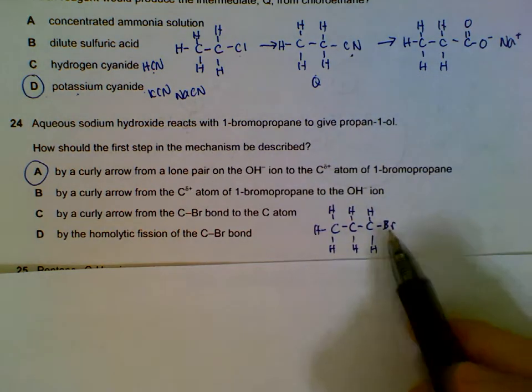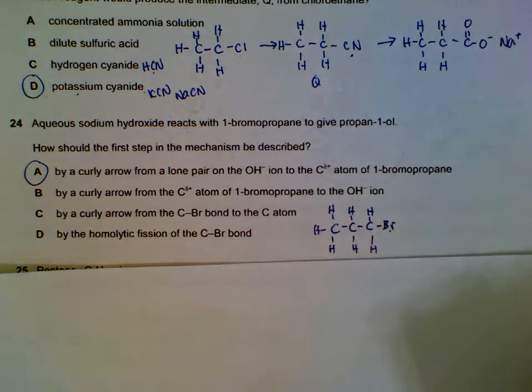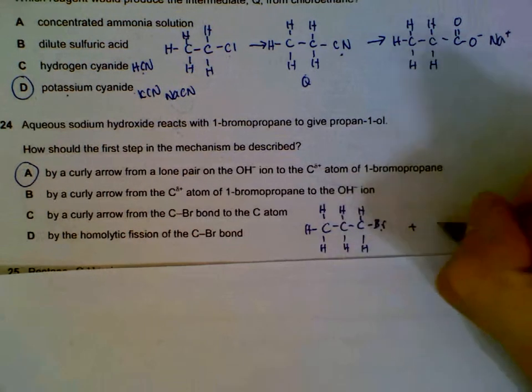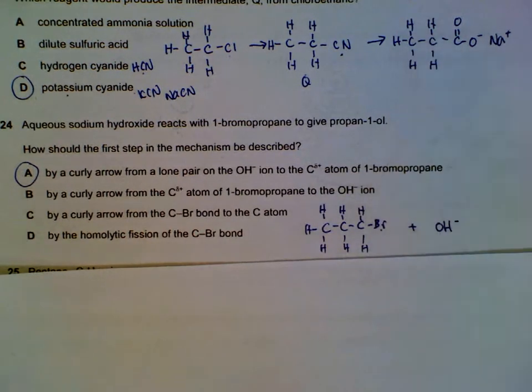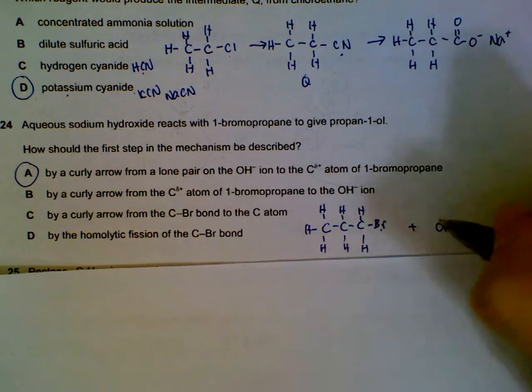So the bromine is attached to the tail end carbon, and then we have the hydroxide that comes from the sodium hydroxide.